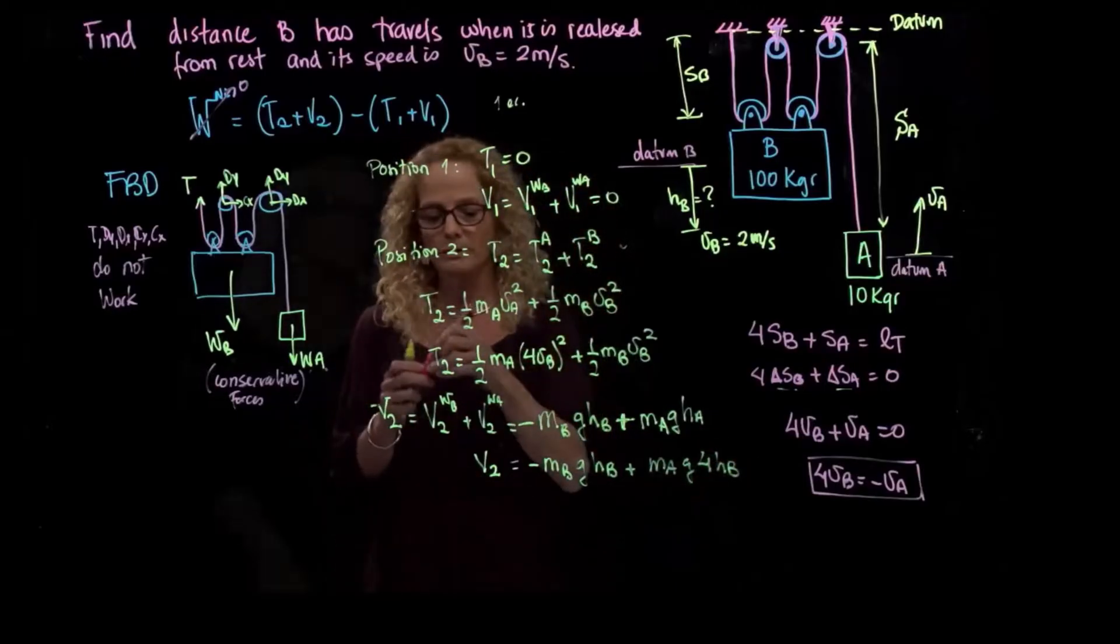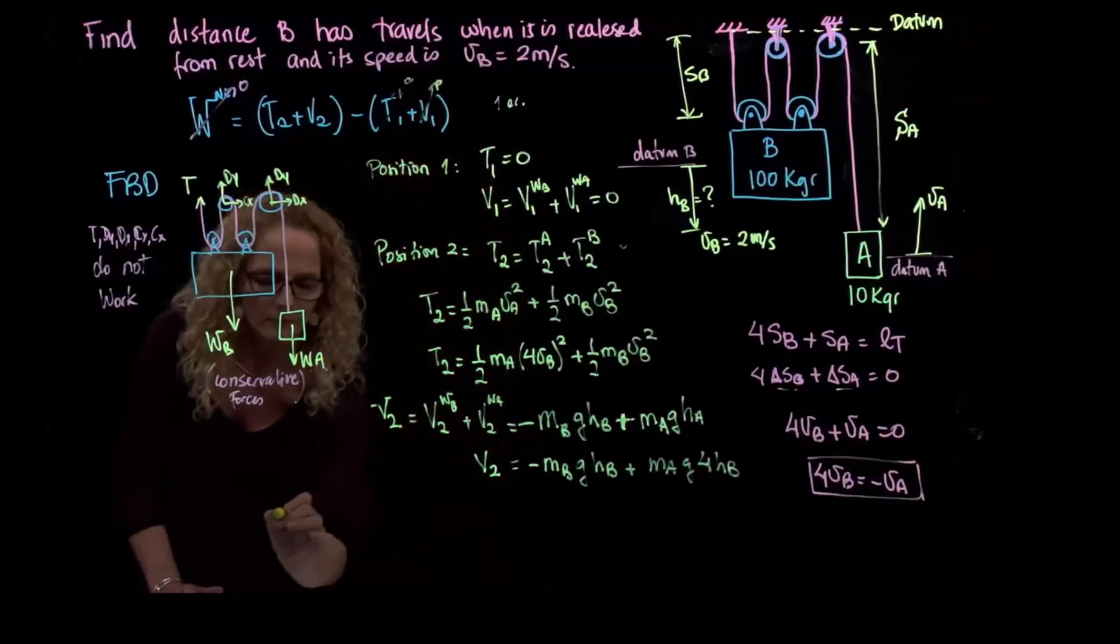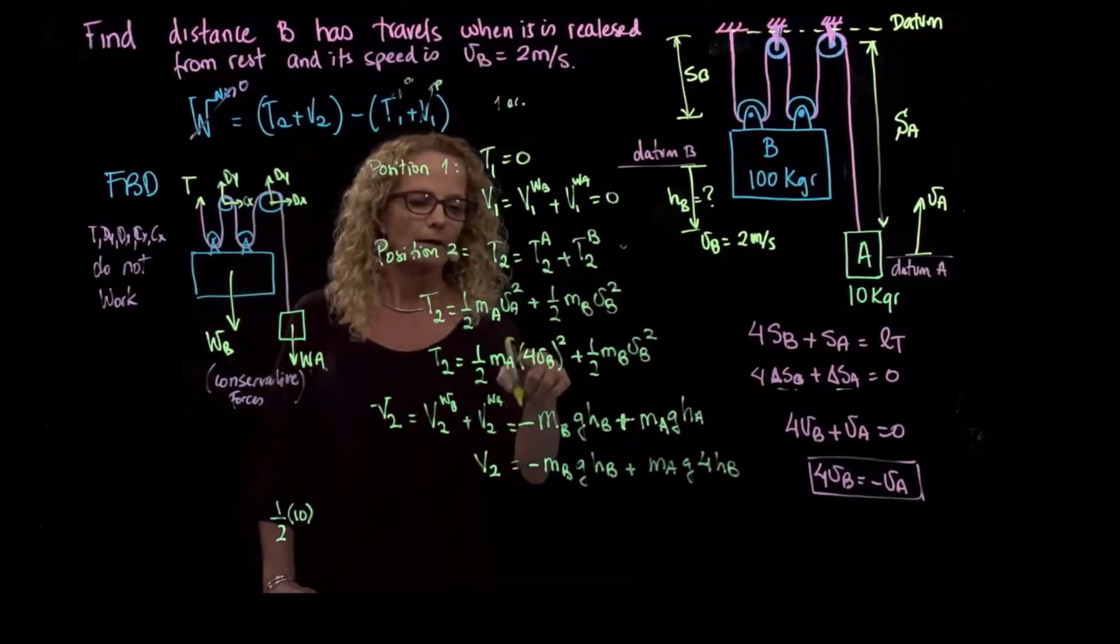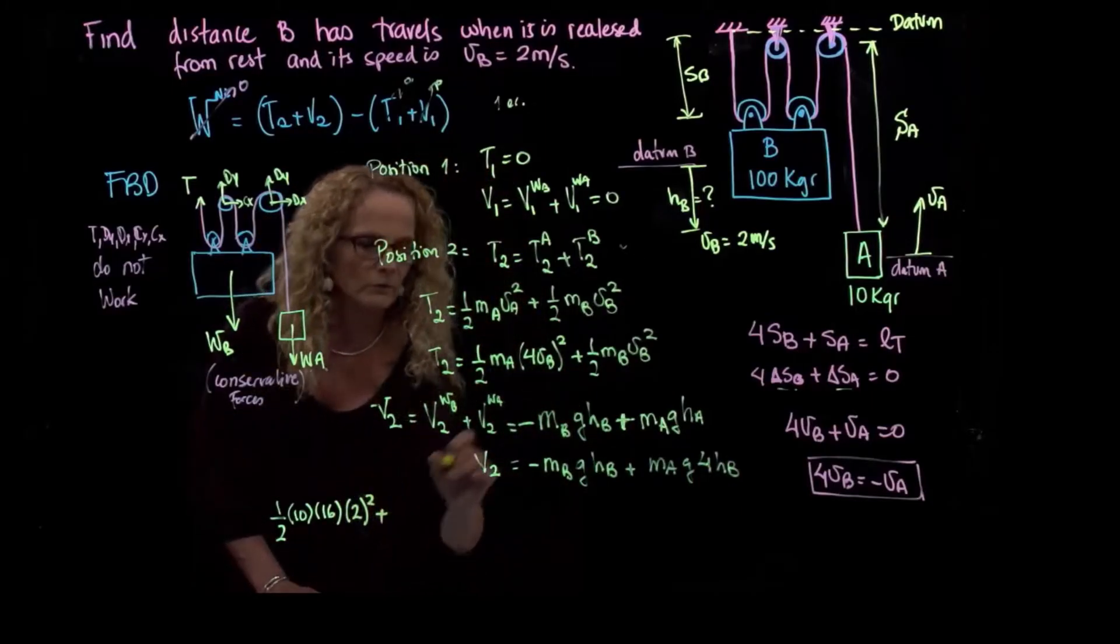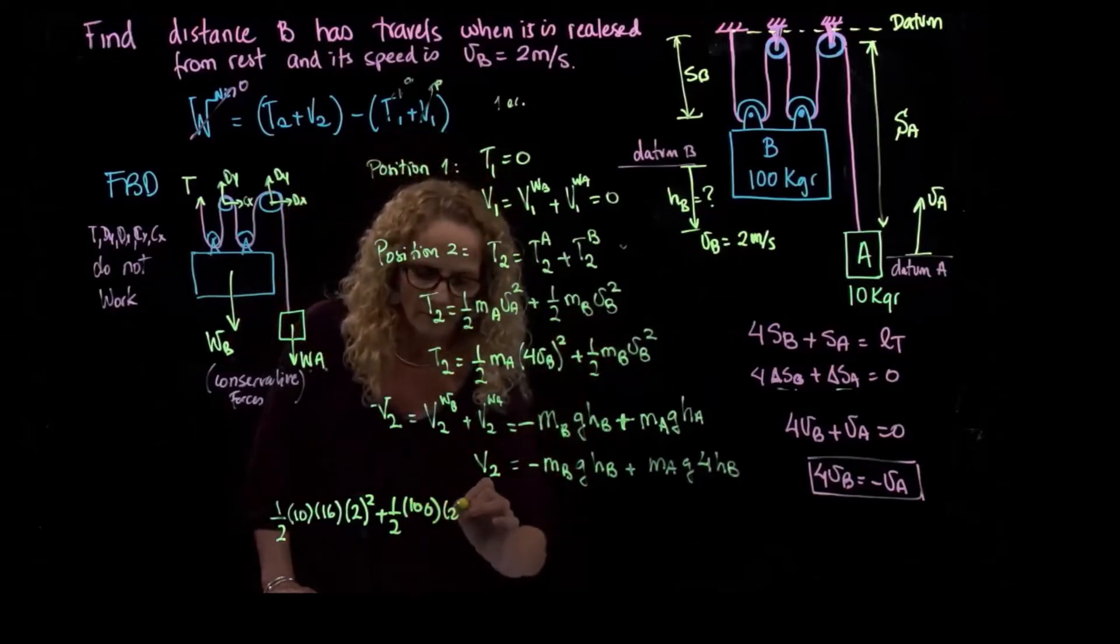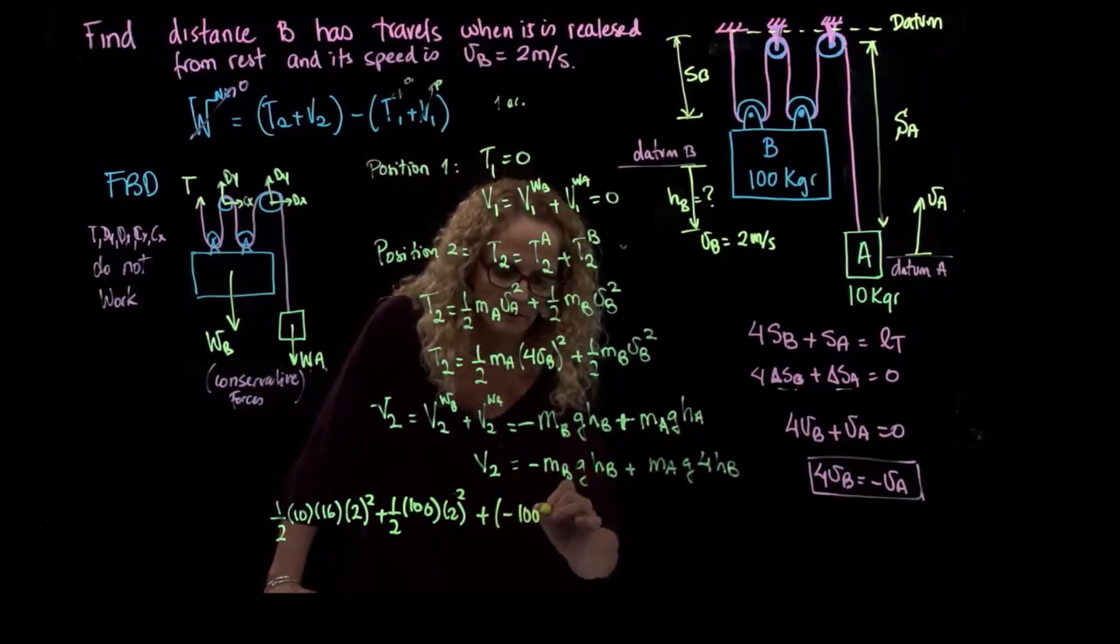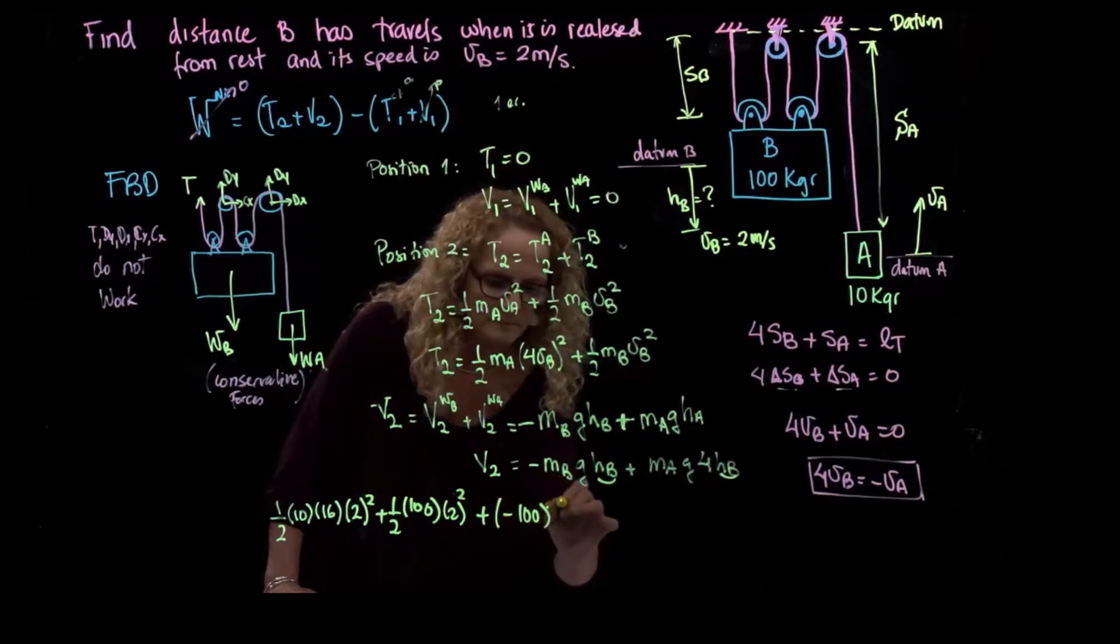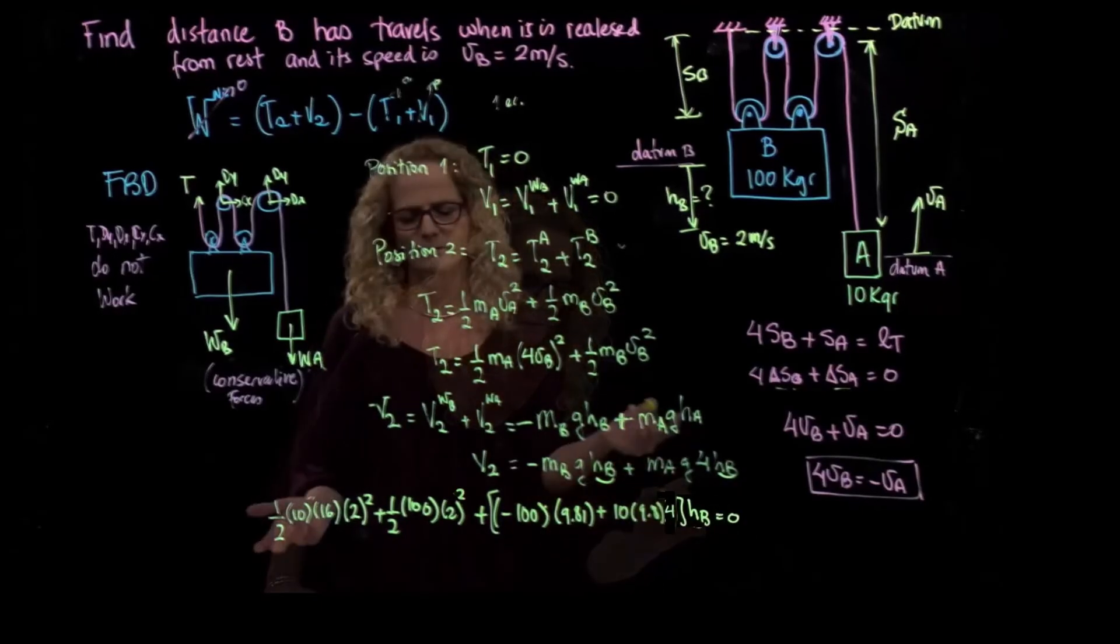So we plug those two values in our equation. So we say that those two are zero, and we end up only with those two. And so substituting, we have one-half mass A is equal to 10. Here I have a 16. So that means 16 times the velocity, which is 2 squared, plus one-half 100 times 2 squared plus this one right here, which means negative 100. I'm going to take, this is my unknown, so I take it, I will take it out. So times the gravity plus mass A times the gravity times 4, and all that HB.